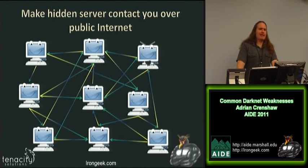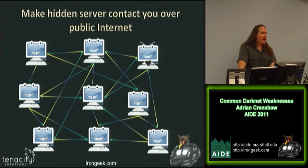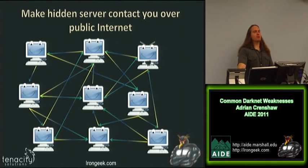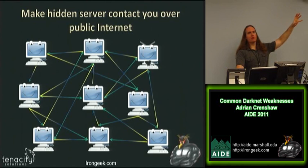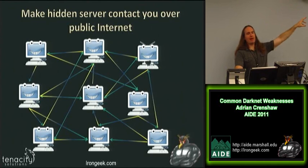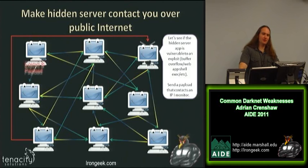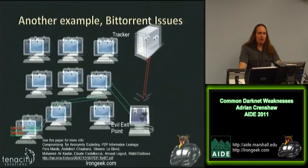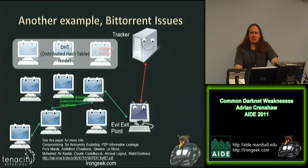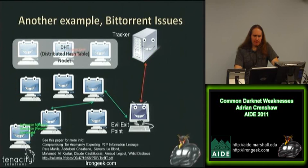Some attacks try to make a hidden server contact you over the public internet. You might be trying to reveal the identity of a hidden server inside the I2P network — you know its name but not its real IP address. If you can contact it with an exploit, say a shell execution exploit via a web vulnerability, and tell it to ping you, then game over — you can make it ping you from its real IP address. There are mitigations you can do for this, though.